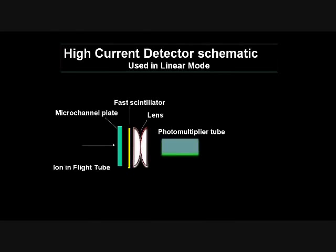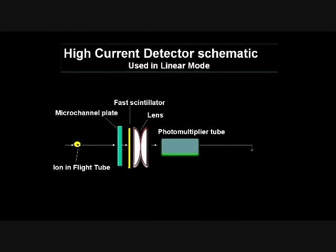A high-current detector in linear mode consists of five components: a micro-channel plate, a scintillator, a lens, a photomultiplier tube, and a digitizer. The ion signal passes to the micro-channel plate and scintillator, and the image produced is magnified through the lens and photomultiplier tube. The signal produced generates peaks.